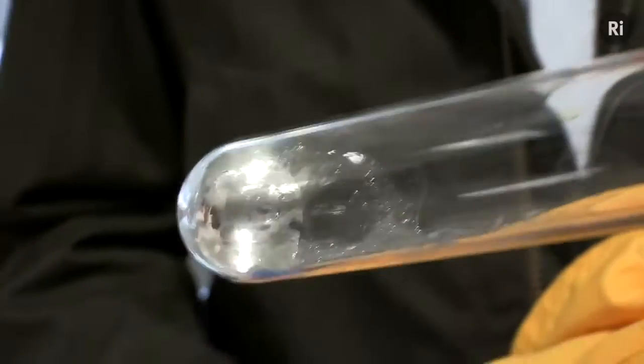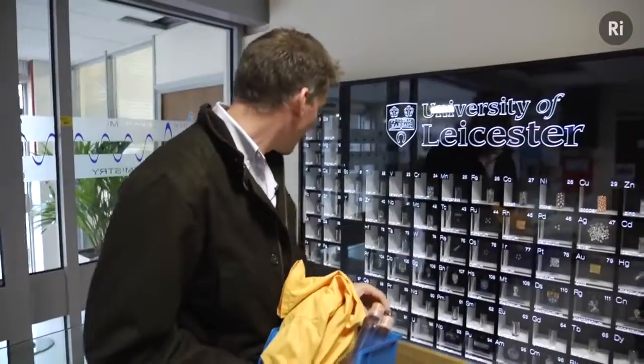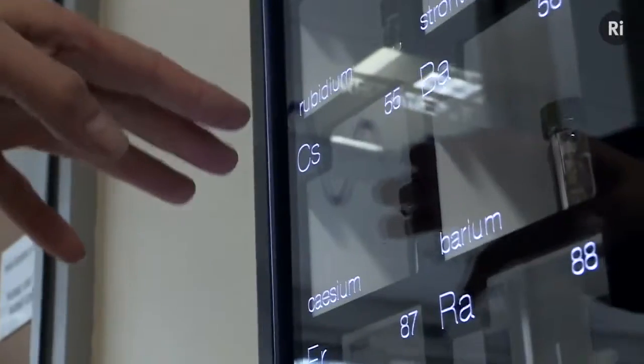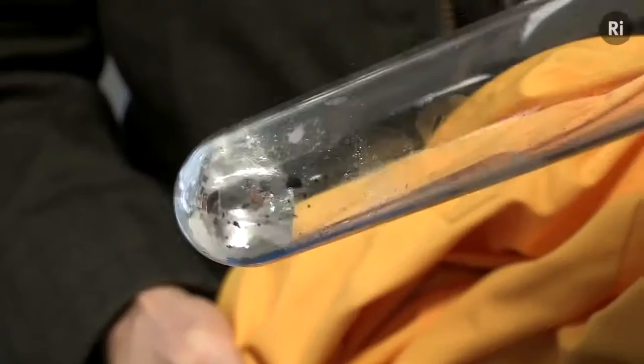I've come to the University of Leicester with a tube containing caesium. Caesium is the most reactive metal in the entire periodic table, even more reactive than francium. This is a radioactive element that decays, but caesium is more reactive than this. It's the most reactive thing we can find.